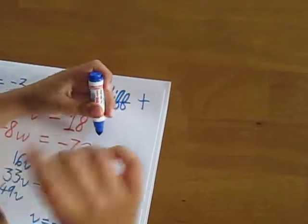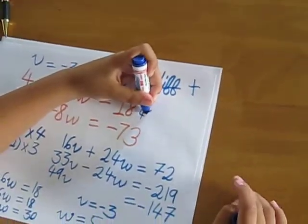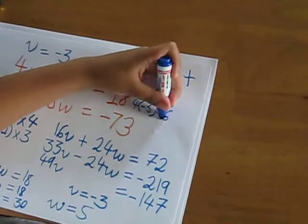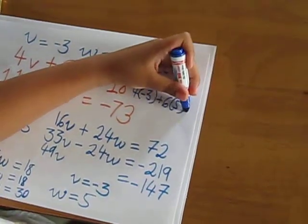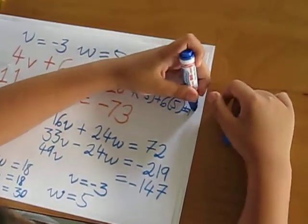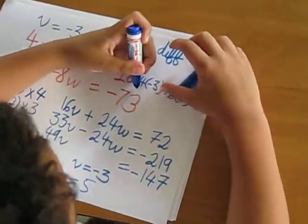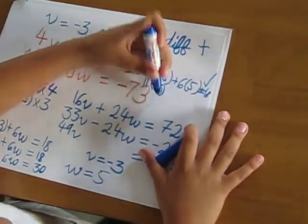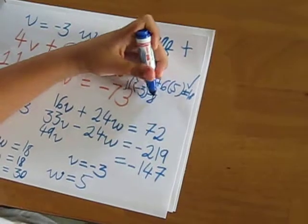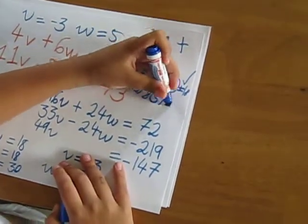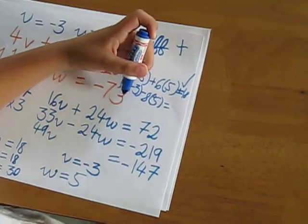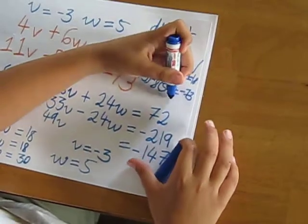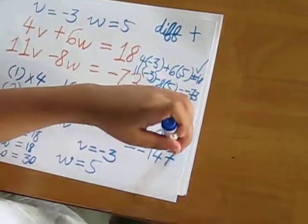Checking equation 2: 11 times minus 3 minus 8 times 5 equals minus 33 minus 40, which is minus 73.